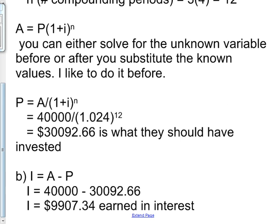Part B of this question asks how much interest will they earn over the term of their investment. Well, the interest equals the future value minus the principal that they should have invested. So I equals $40,000 minus the amount that we just found. That equals $9,907.34 earned in interest.